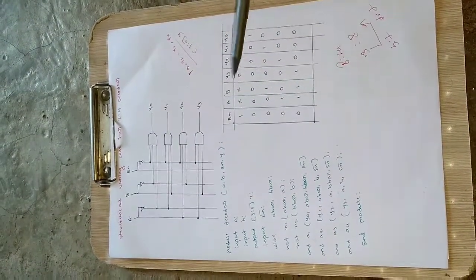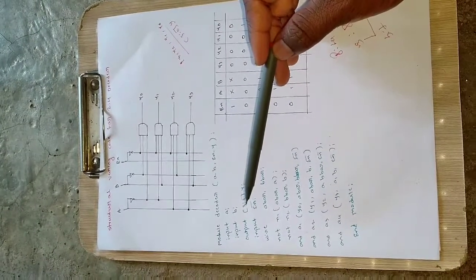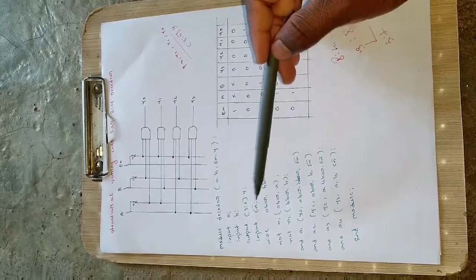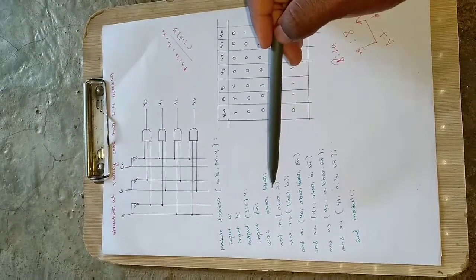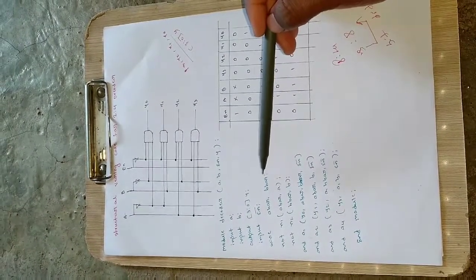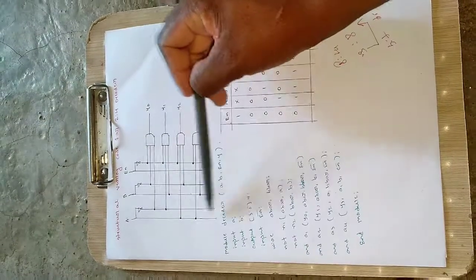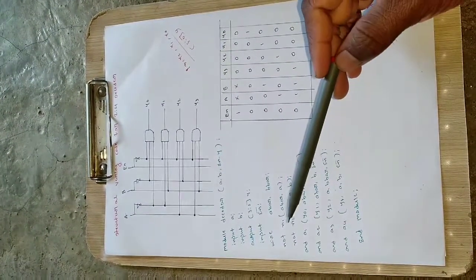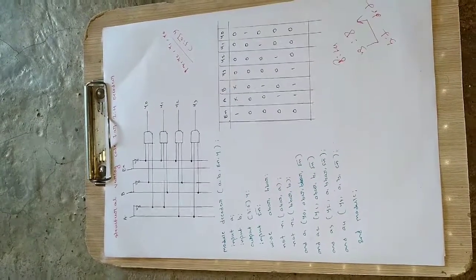We will have Y3, Y2, Y1, Y0 taken in vector form. Input enable bar, then wire A bar and B bar. These are used for intermediate calculations.